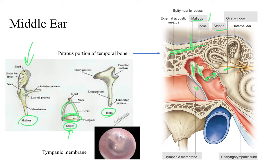Note that the middle ear also has a mucous membrane lining it that is continuous with the pharyngotympanic tube, which leads into the nasopharynx. Its job is to provide an equalization chamber for pressure between the middle ear and the nasopharynx. It also serves as a passageway to clear mucus from the middle ear, which is drained through the Eustachian tube.